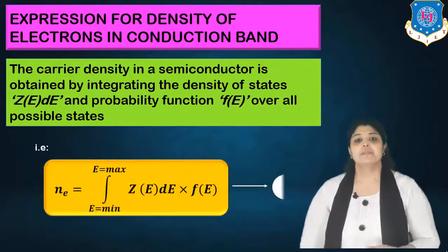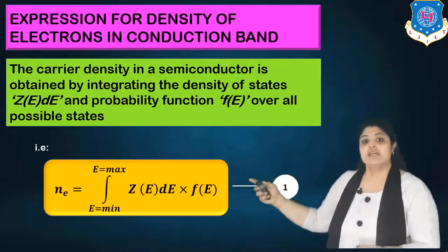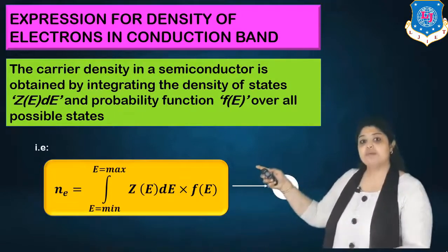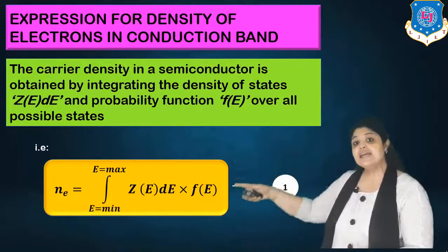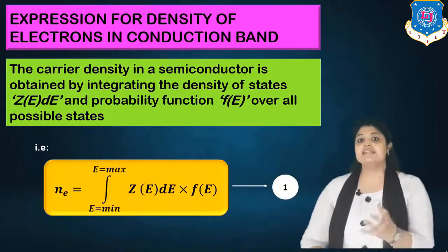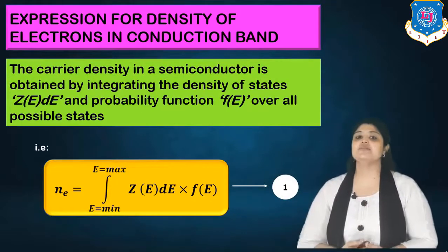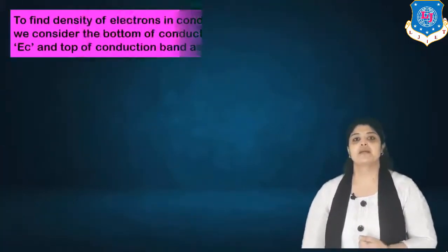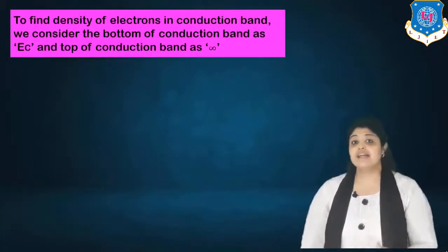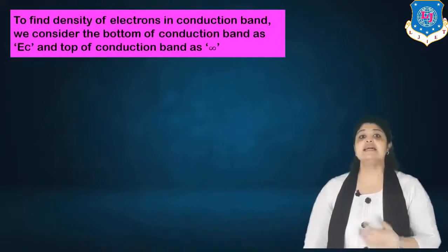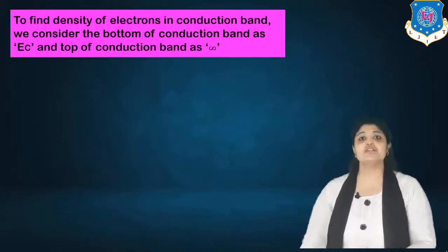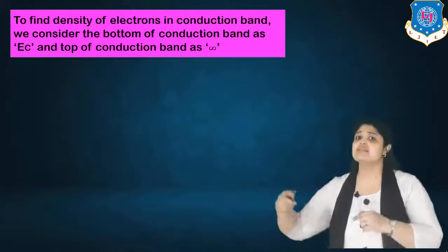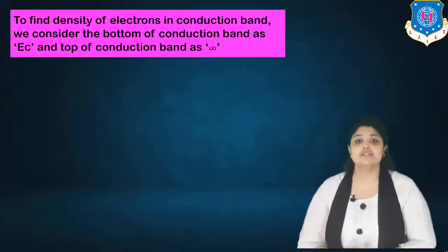The equation for NE is: NE equals the integral from E-minimum to E-maximum of Z(E)dE multiplied by F(E), where Z(E)dE is the density of states and F(E) is the probability function. To find the density of electrons in the conduction band, we consider the bottom of the conduction band as EC and the top as infinity, consistent with the band diagram discussed earlier.